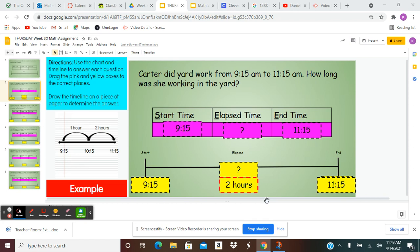Now, after I have drawn my timeline on my piece of paper, I can see that the amount of time that has passed between 9:15 and 11:15 is two hours. So I have typed the answer two hours in the red outlined box. So, go ahead.